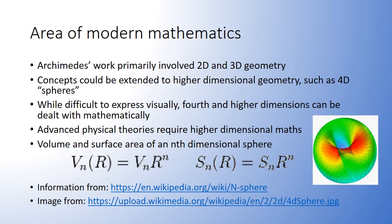Advanced physical theories require higher dimensional mathematics, including string theory, which requires at least 11 dimensions. The formulas for the volume and surface area of an nth dimensional sphere, shown simplified here, are recursive formulas, and if the case n equals 3 is considered, the formulas Archimedes established and proved just drop out.